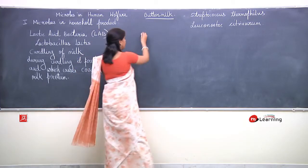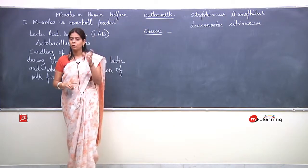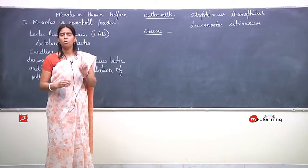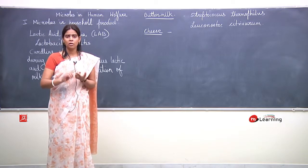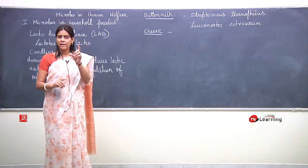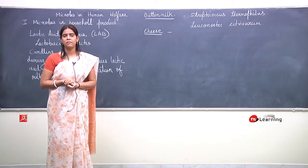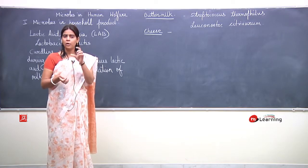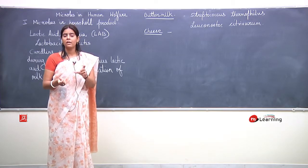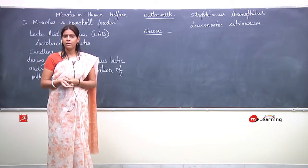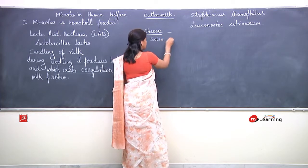Milk ka ek aur important product hota hai — that is cheese. Cheese mainly characterize hota hai uske texture se aur uske flavor se. Bahut saare cheese ke types hain; types depend karte hain texture of the cheese and flavor of the cheese. Ye texture aur flavor mainly microbes ki activity ki wajah se develop hota hai. Swiss cheese sabse common cheese hai.